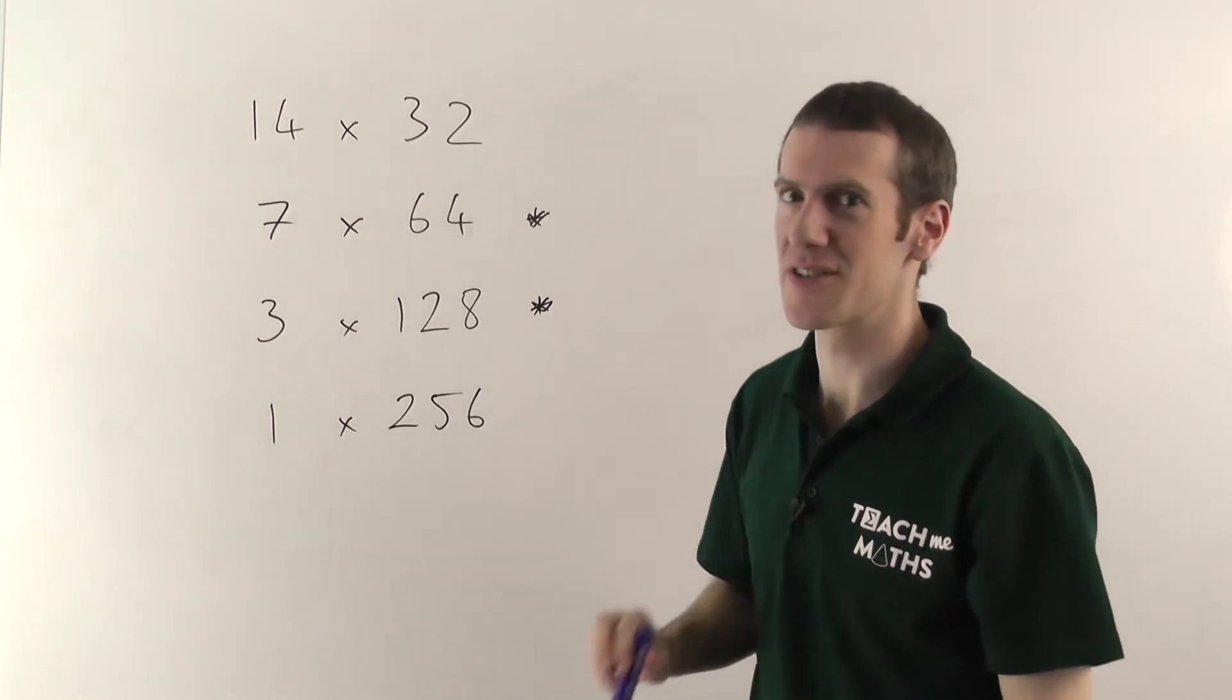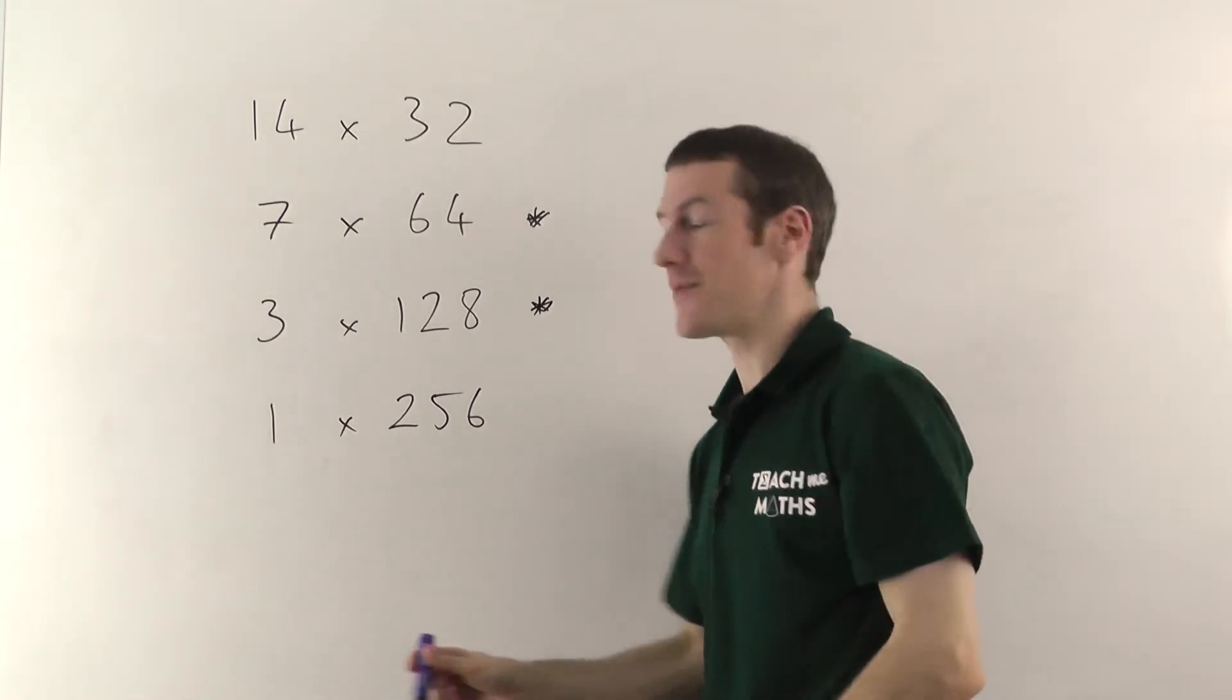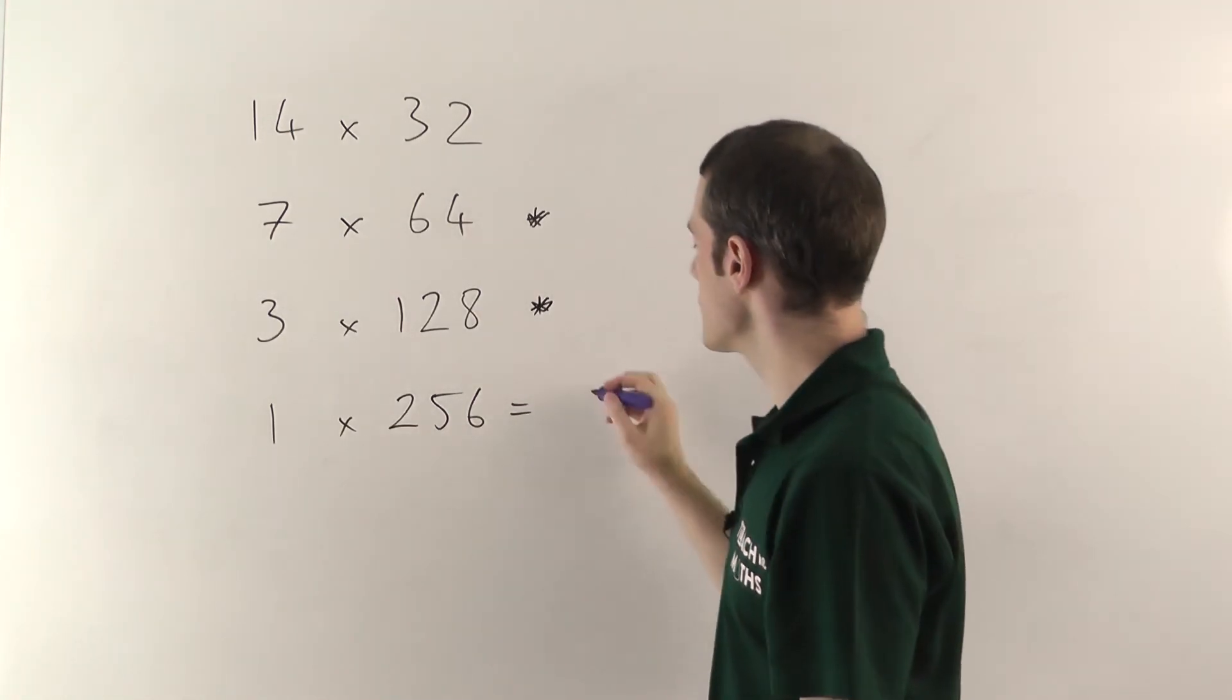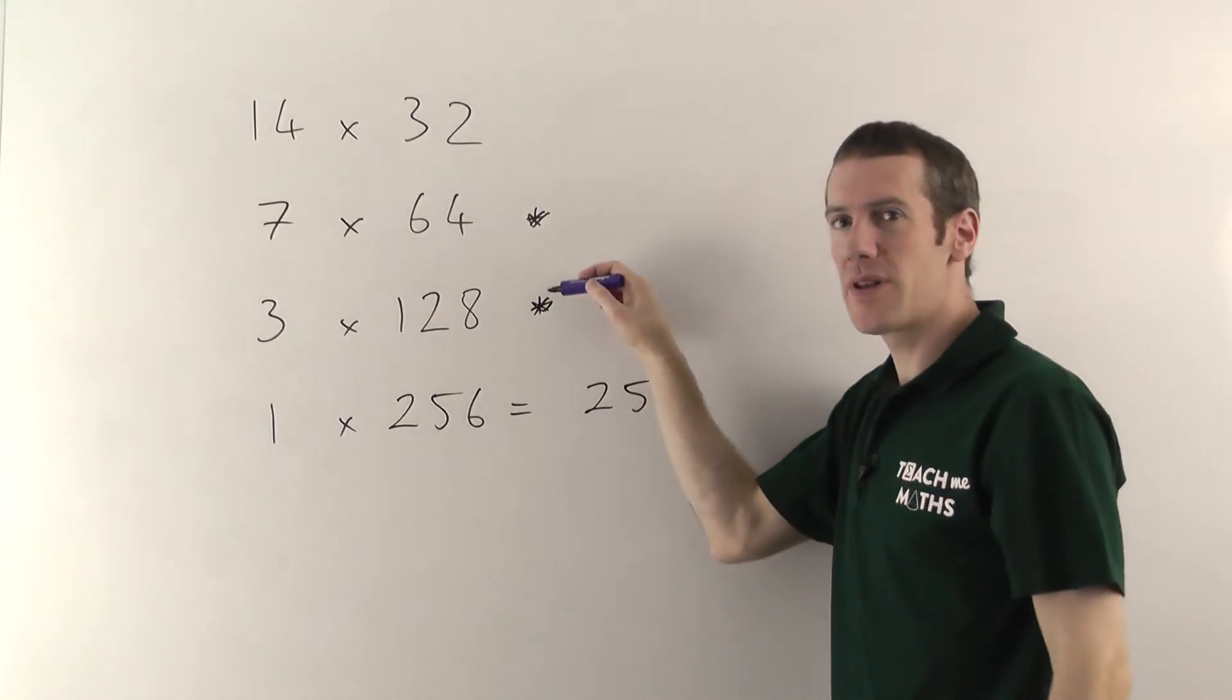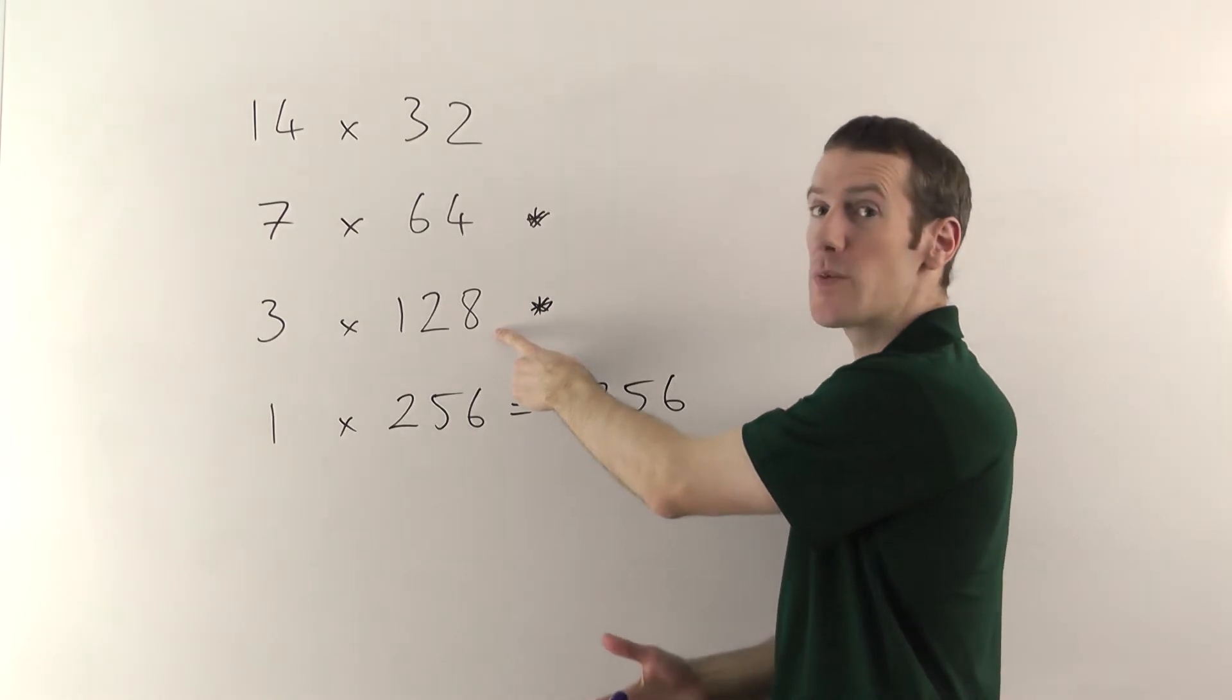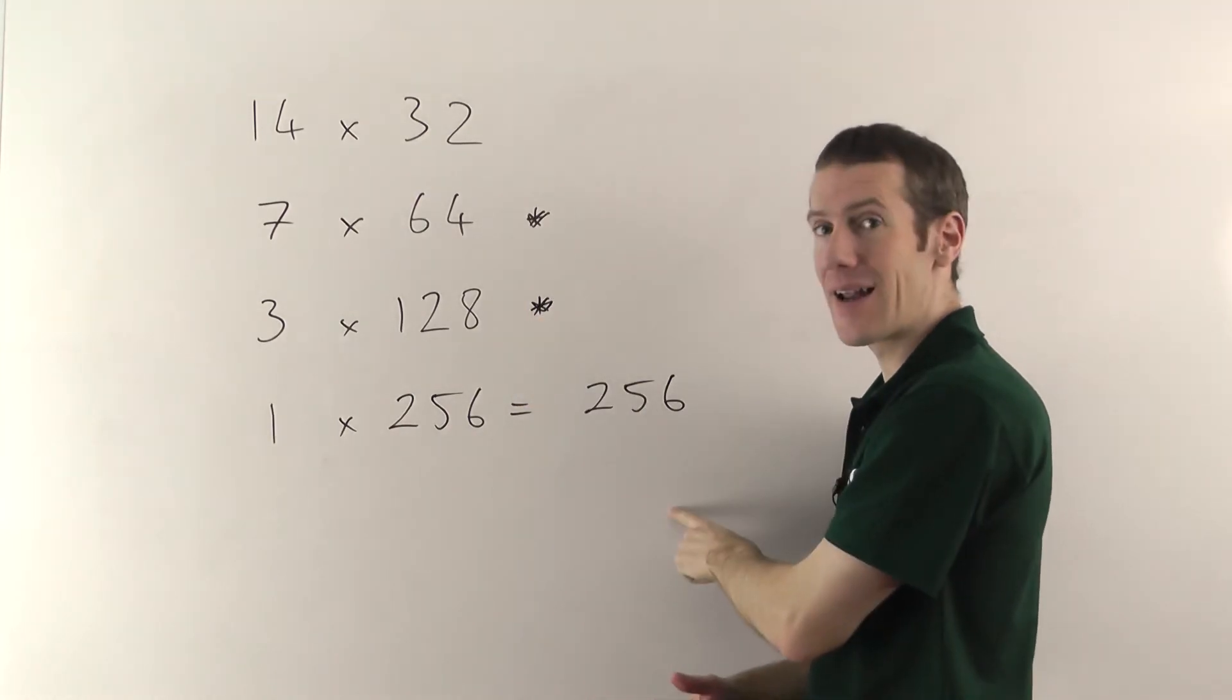We'll come back to these asterisks in a minute. But I can do that, that's really easy. So 1 times 256 is 256, and then the reason we put these here is you have to add any numbers where you put asterisks onto the final answer.